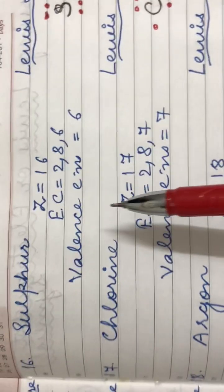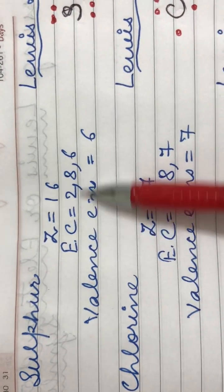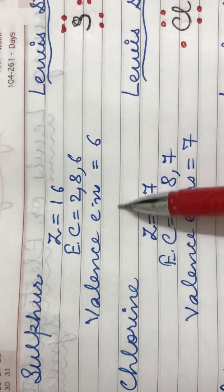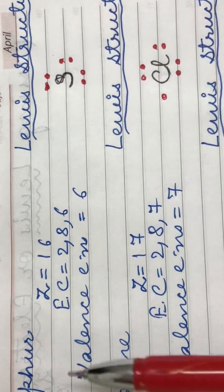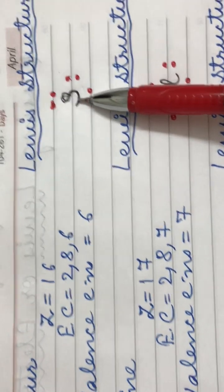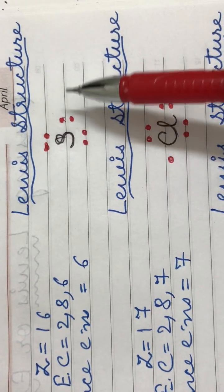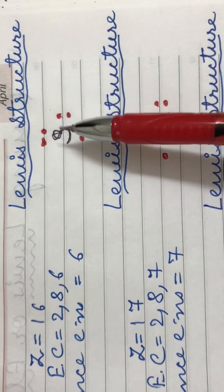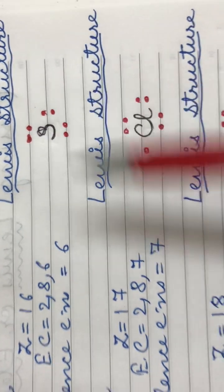Next comes sulfur. Sulfur has an atomic number of sixteen. Its electronic configuration is 2,8,6 and it has six electrons in its valence shell. Therefore, the Lewis structure for sulfur is the symbol S with six electrons shown as six dots placed in pairs around the symbol.